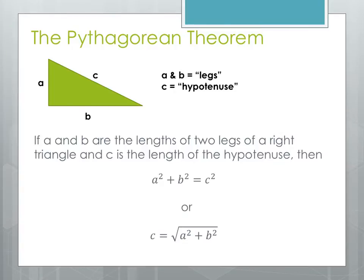The Pythagorean Theorem applies to right triangles, which are triangles that have a 90 degree angle right here in one of the corners. The legs of the triangle are labeled A and B — those are the sides that touch that 90 degree angle — and the opposite side is called the hypotenuse, labeled C. The hypotenuse is the side that's opposite the 90 degree angle.